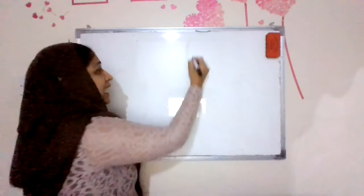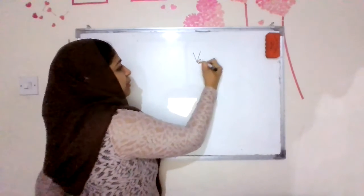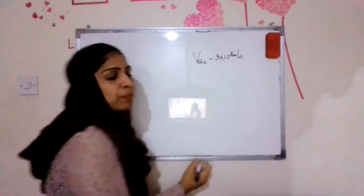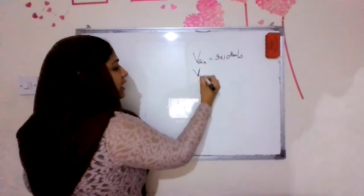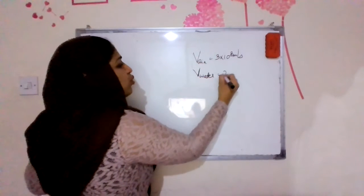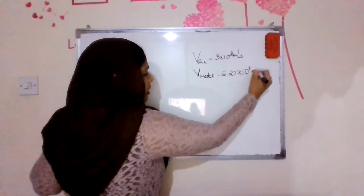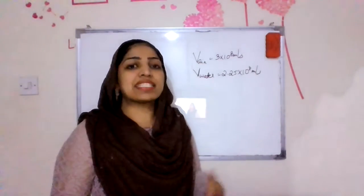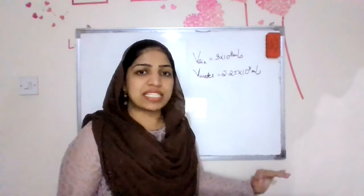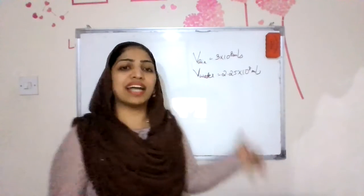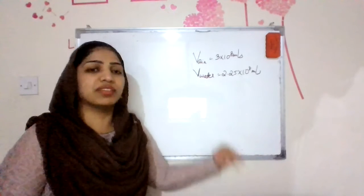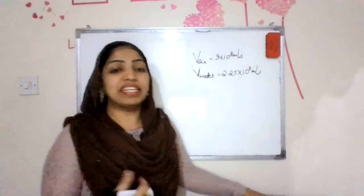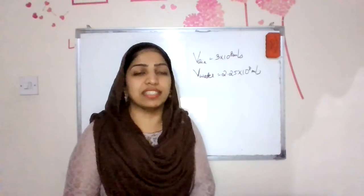The speed of light is 3 × 10⁸ meters per second in air. In water, the speed of light is 2.25 × 10⁸ meters per second. In different media, the speed of light is different. This difference in speed is the main reason for refraction.